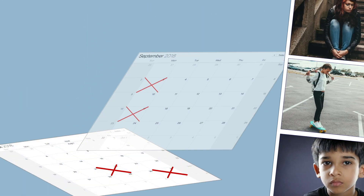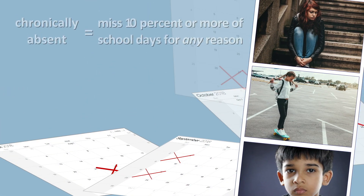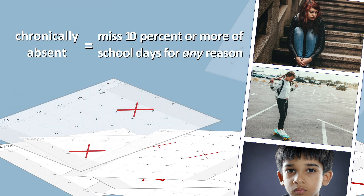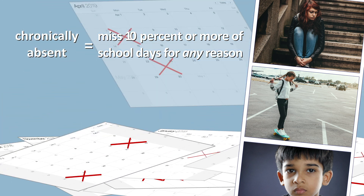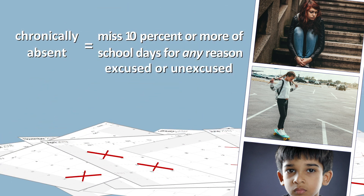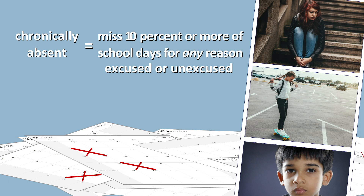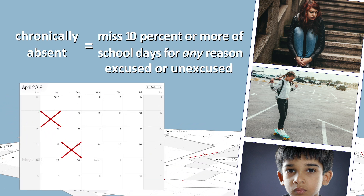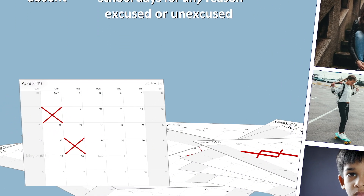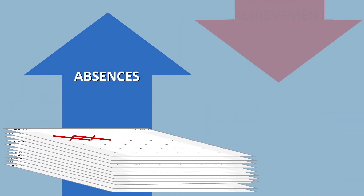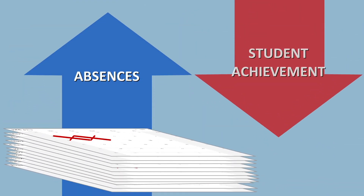Students are considered chronically absent when they miss 10% or more of school days for any reason, whether their absence is excused by a parent or guardian or unexcused. That 10% is just two days a month. There's a lot of evidence showing that when absences add up, student achievement goes down.